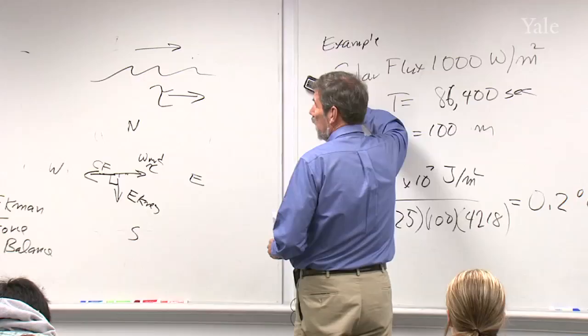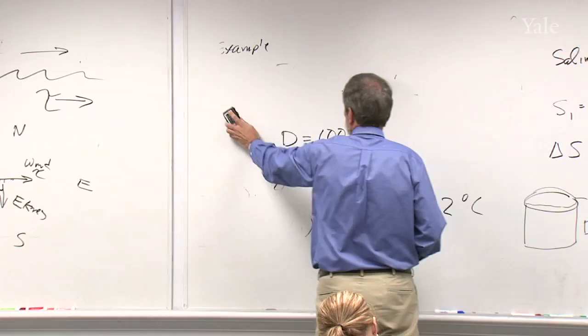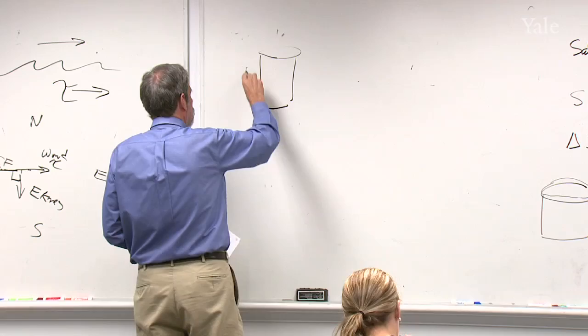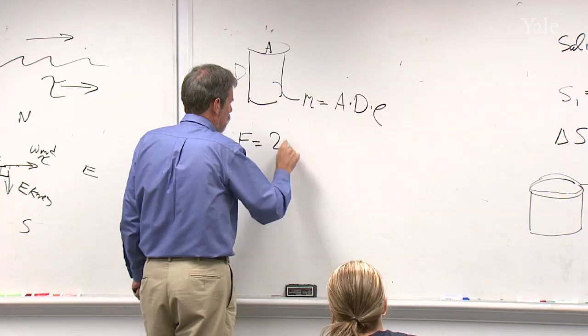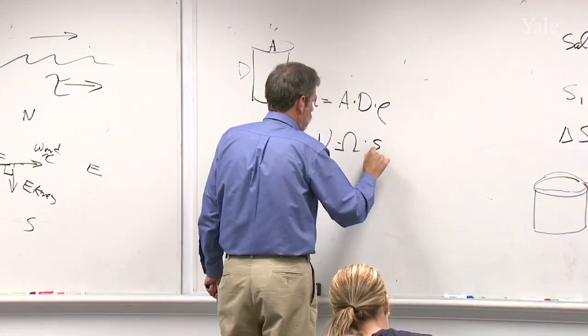We can do a calculation. I probably don't have time to finish this today, but we can do a calculation of how fast that water will move. If I have, again, a column of depth d, it has a mass given by A d rho across the area, the height of the column, and the density of seawater. If it begins to move, it'll have a Coriolis force given by 2, the mass, the speed, the rotation rate of the Earth, and the sign of the latitude. And that's going to have to balance the wind stress.